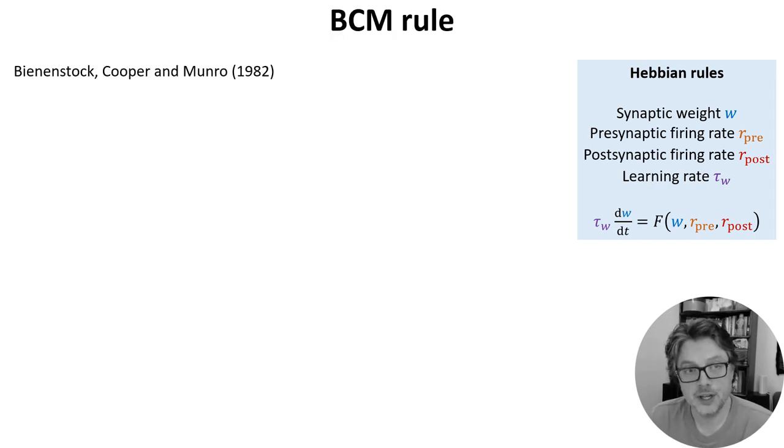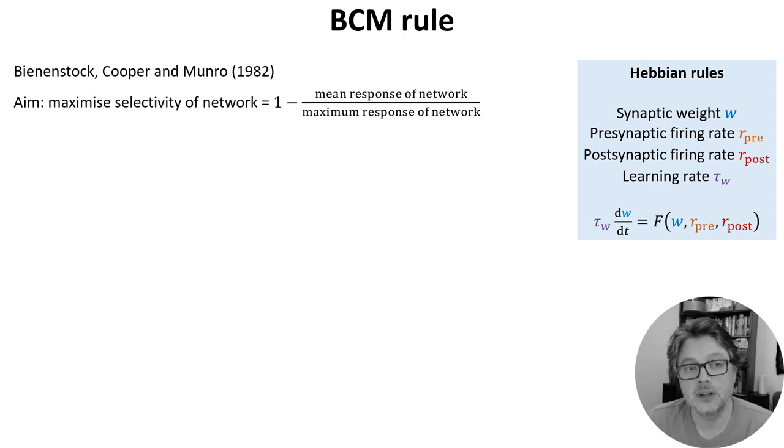So we've seen that Oja's rule keeps weights bounded and leads to a neuron learning principal components. Another approach is the BCM rule, named after Bienenstock, Cooper, and Munro. Their aim was a model of the development of selectivity in the visual cortex, and so they set out to find a learning rule that maximizes selectivity.